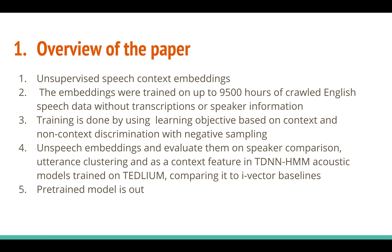Negative sampling is a well-known algorithm used in Word2Vec as an NCE criterion — if you read the 2012 Word2Vec paper by Thomas Mikolov, they used this trick to generate word embeddings. The UnSpeech context embeddings can be used to evaluate speaker comparison and utterance clustering, and also for speech recognition, showing better performance compared to i-vector baselines on the TEDLIUM dataset.